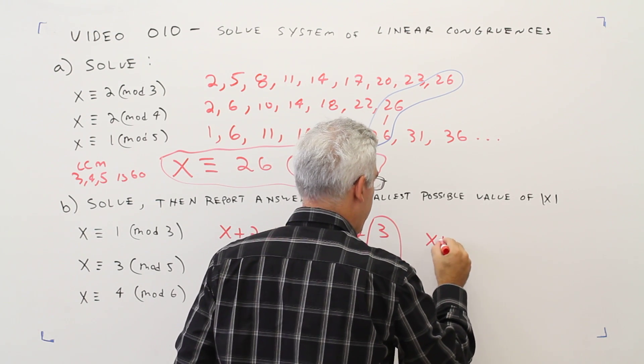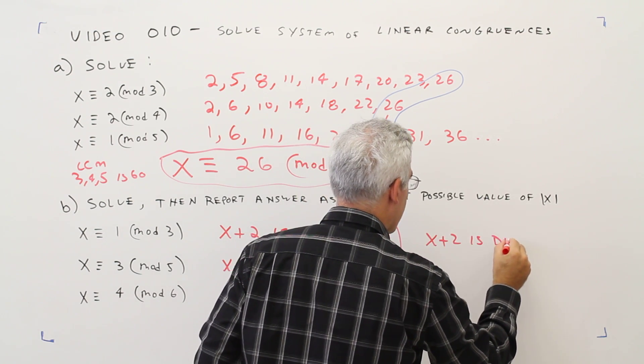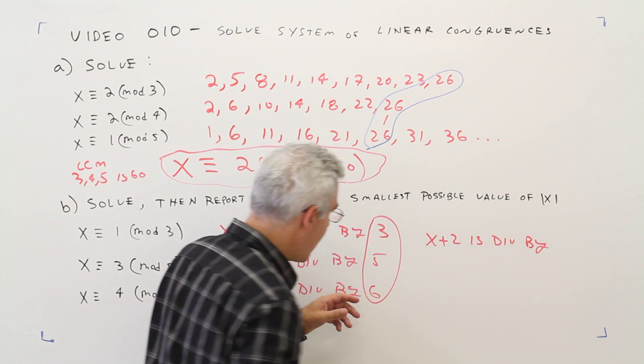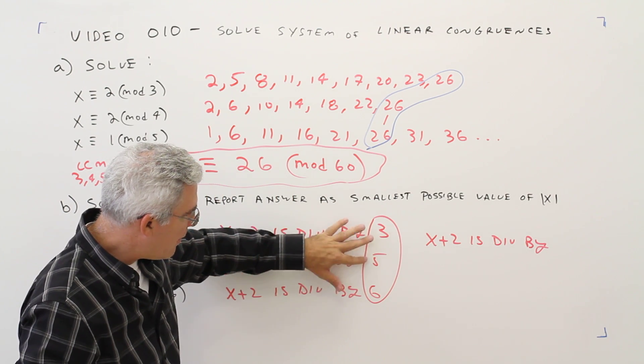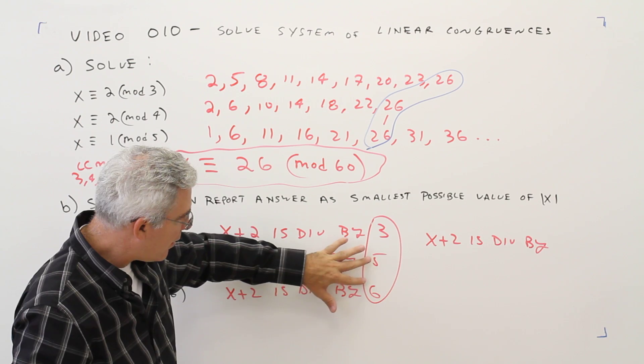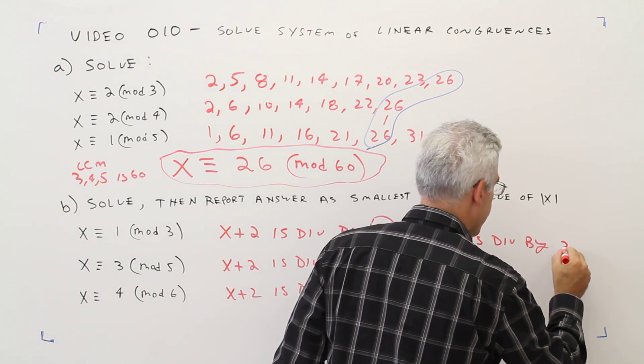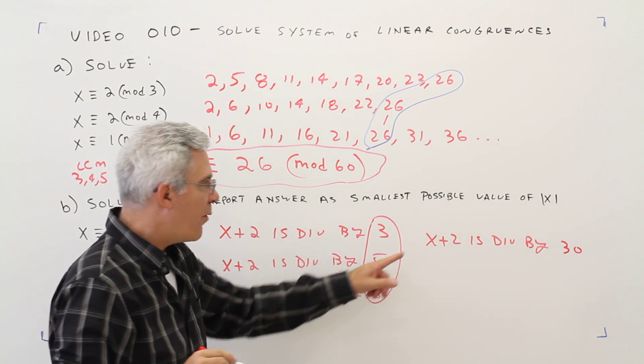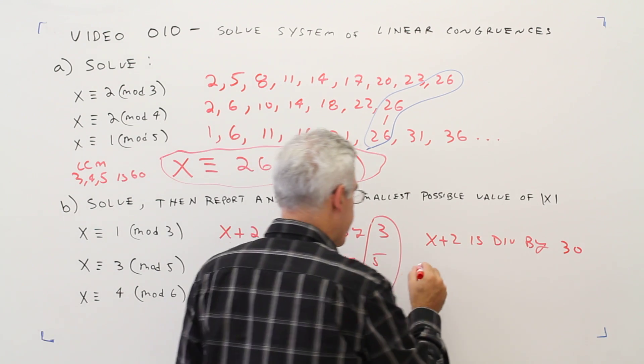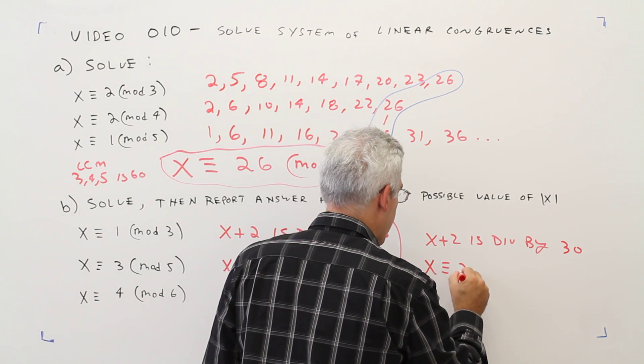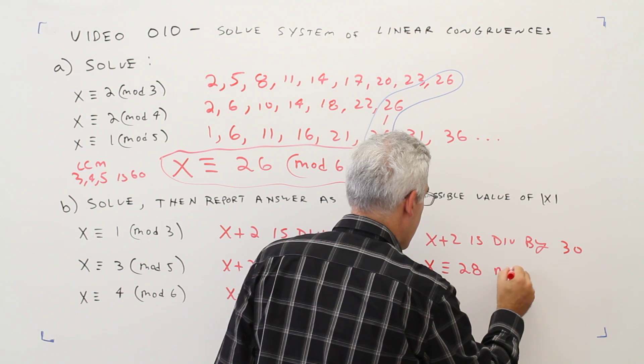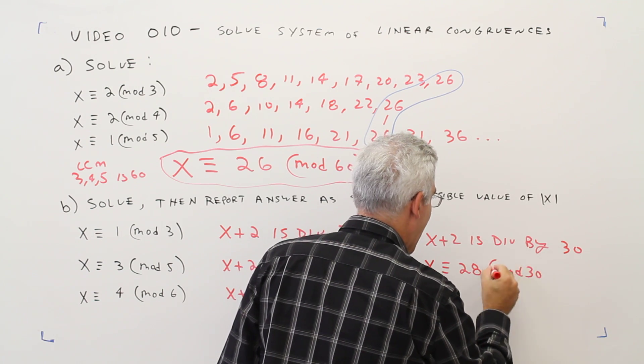Which means x plus 2 must be divisible by that LCM. So x plus 2 is divisible by the LCM of 3, 5, and 6. The LCM is 30. So that means x is congruent to 28 mod 30.